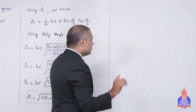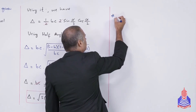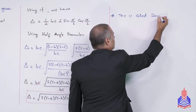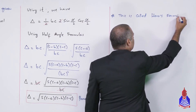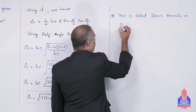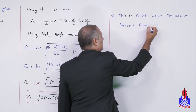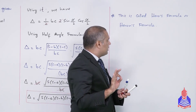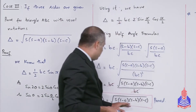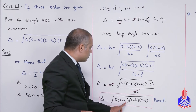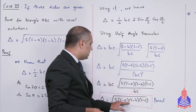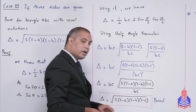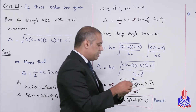Let me recall the name of this formula, as I mentioned at the start. This result is called Hero's formula, also known as Heron's formula. And s = (a + b + c) / 2, which is half of the perimeter of the triangle.